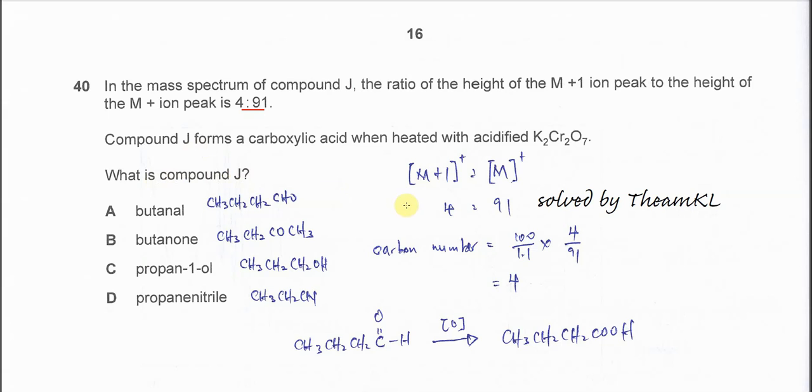First we calculate the carbon number, so we use 100 over 1.1. This is the ratio between the C-12 and the C-13, times 4 over 91, which is given in the question.